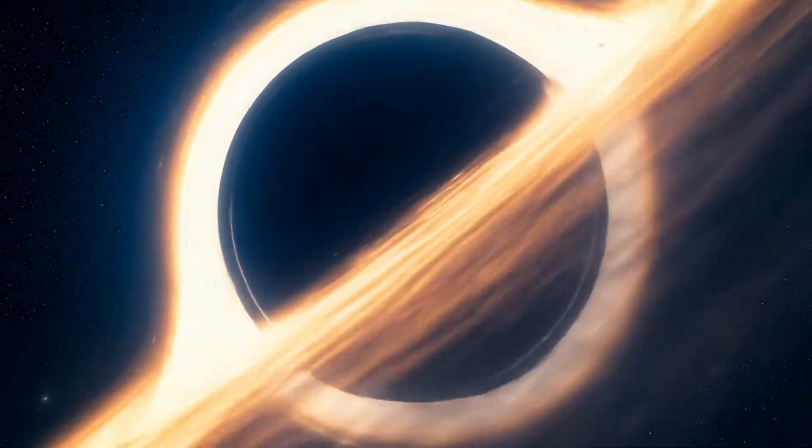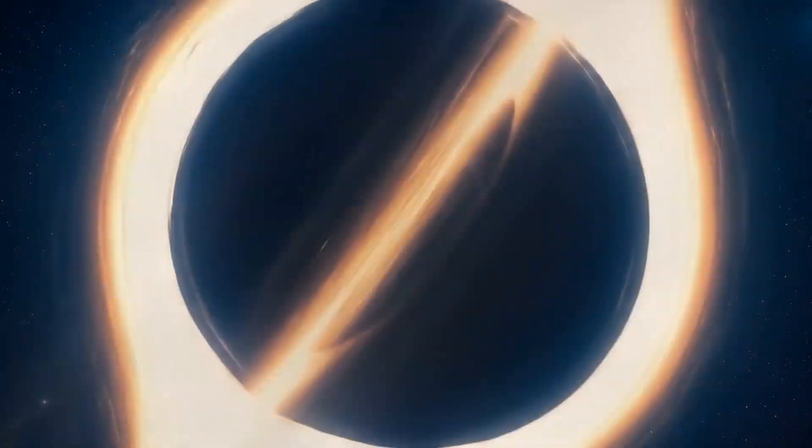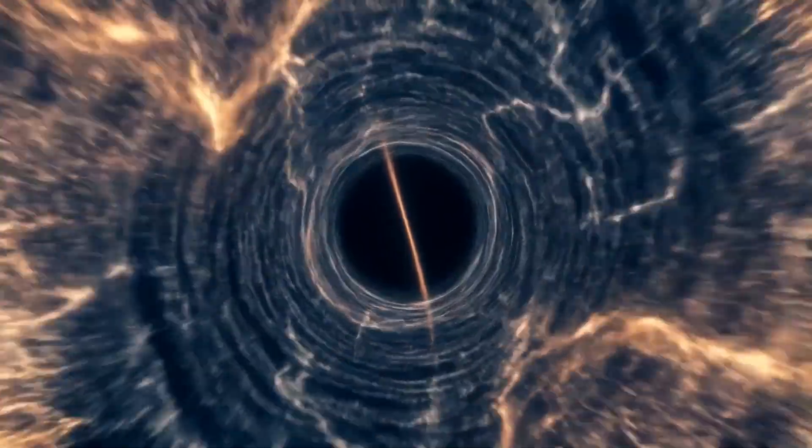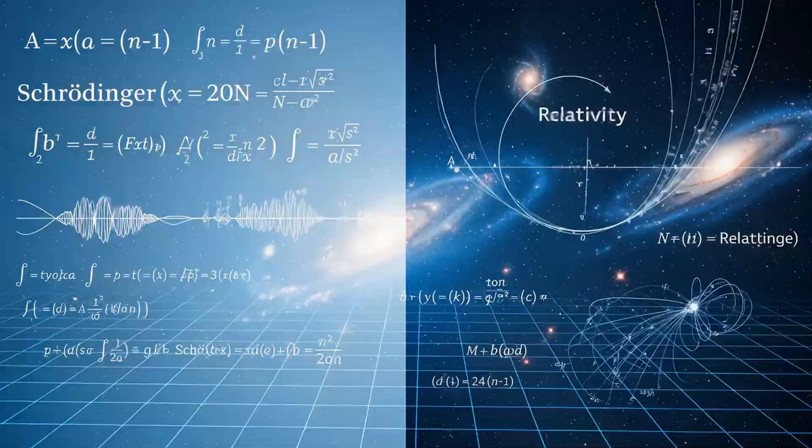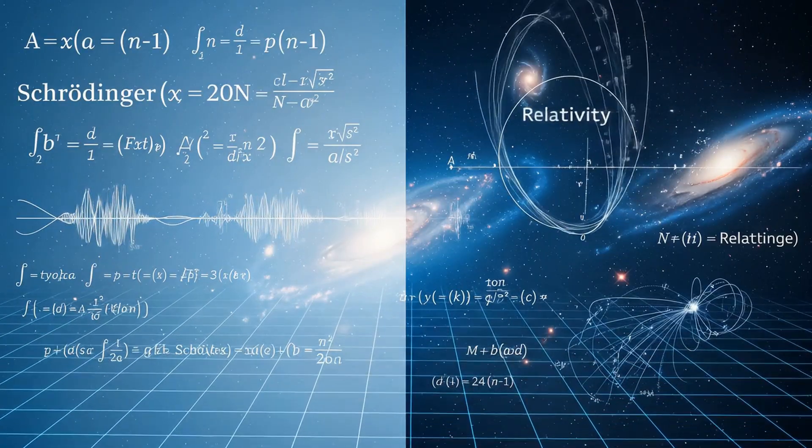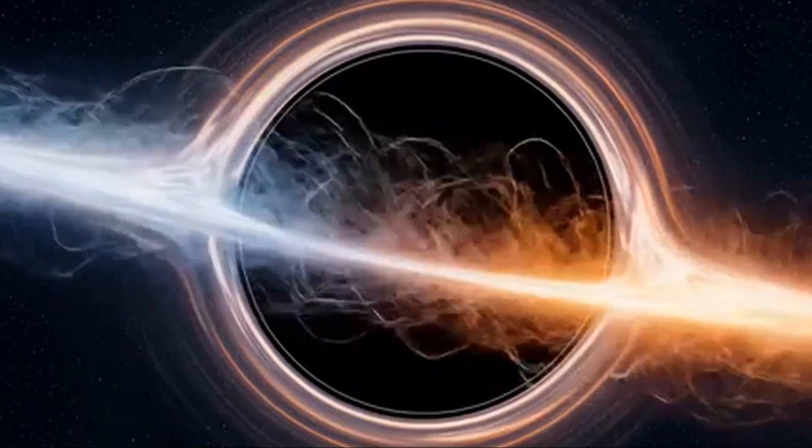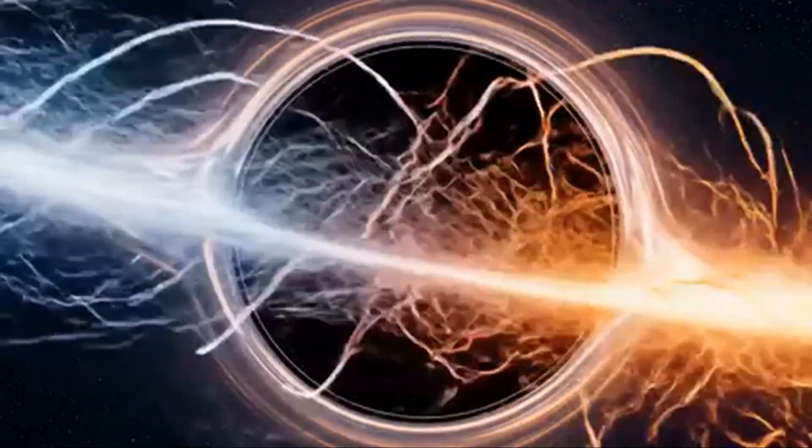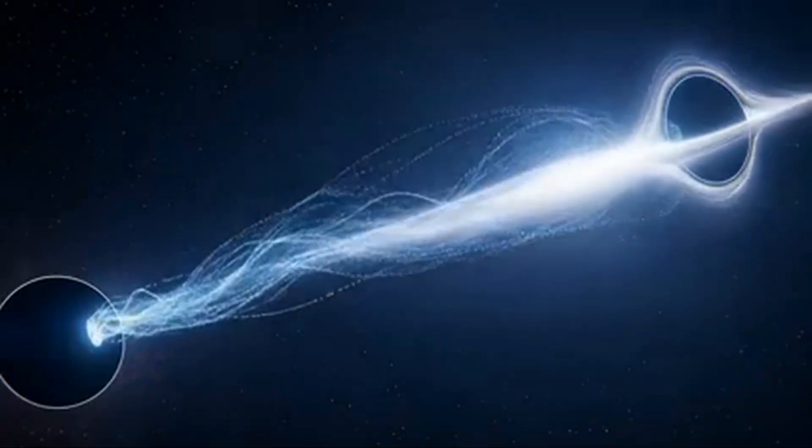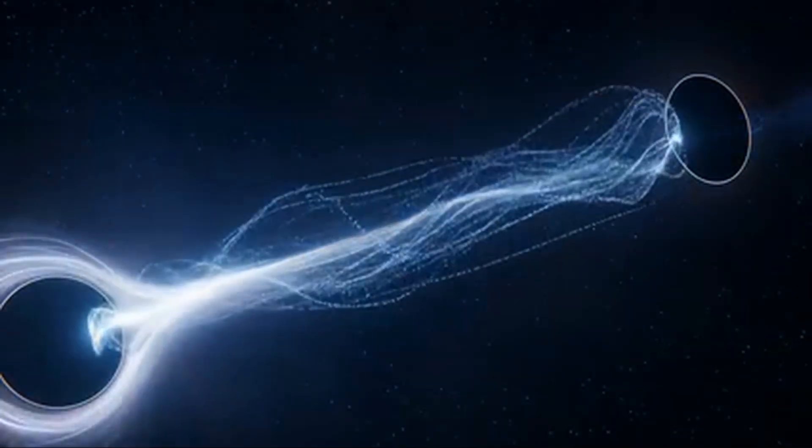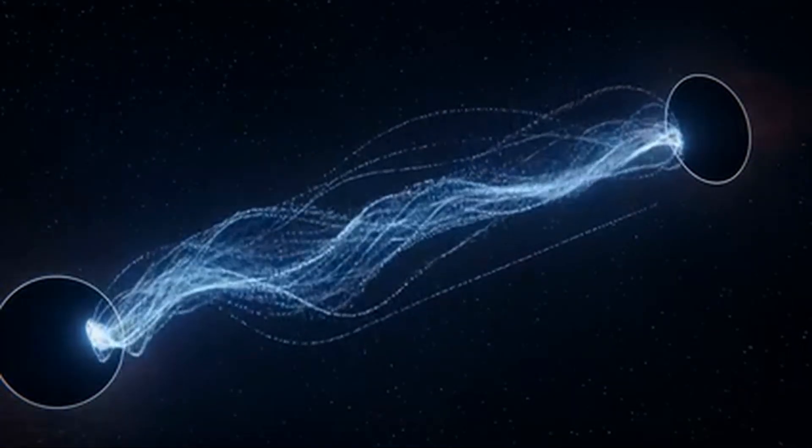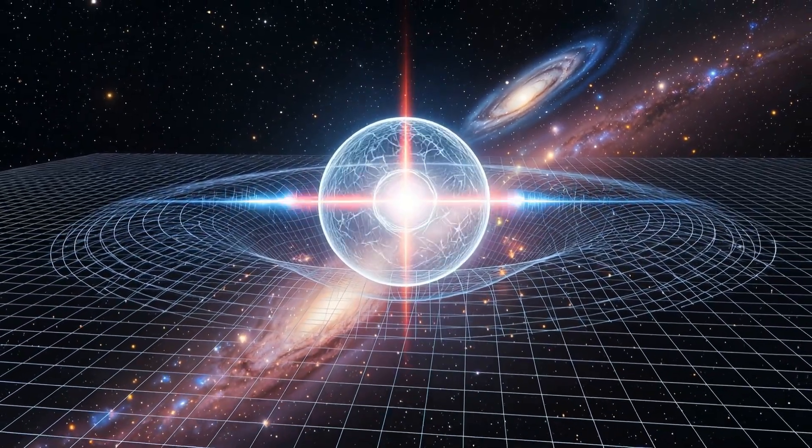Now recall Einstein's vision. In general relativity, space-time curves when energy and mass press against it. In quantum information holography, curvature is written differently, but it means the same thing. The curvature is proportional to probability density multiplied by angular frequency. In other words, the likelihood that a quantum state points a certain way directly defines the curvature of space-time.